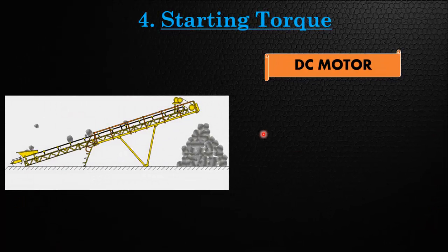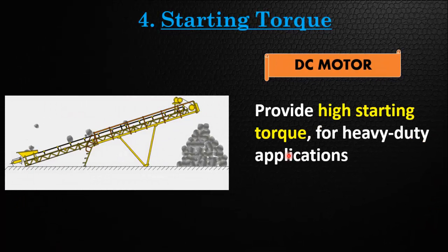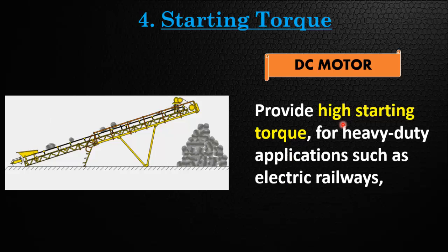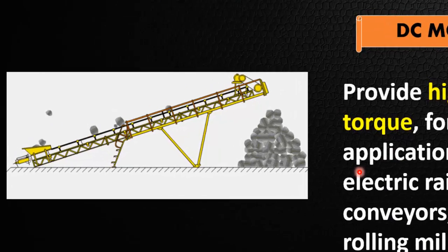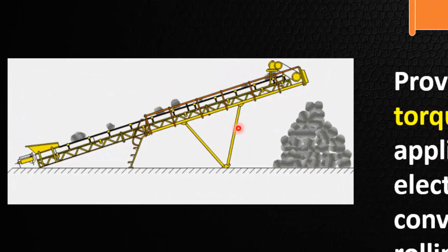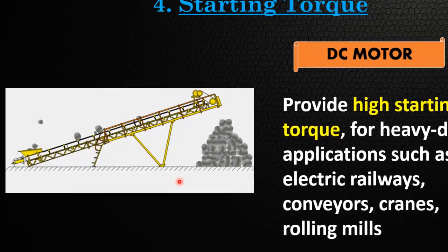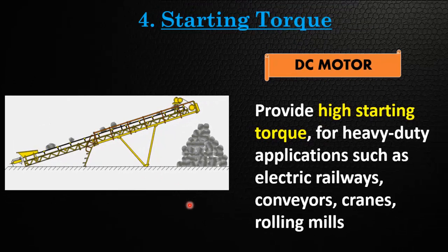DC motors produce high starting torque — almost 6 times the rated torque — and are used in electric railways, conveyors, cranes, and rolling mills.